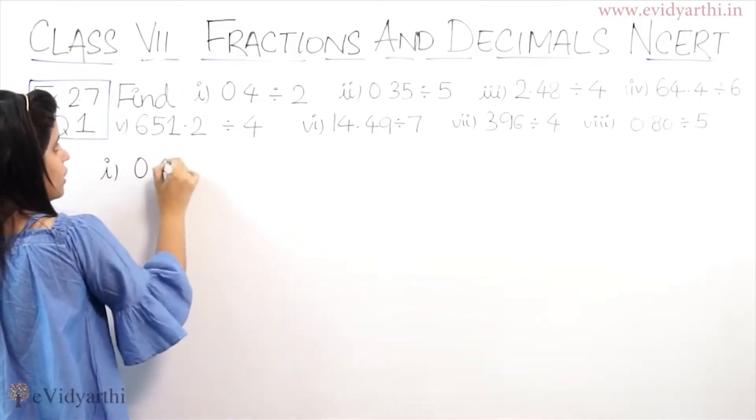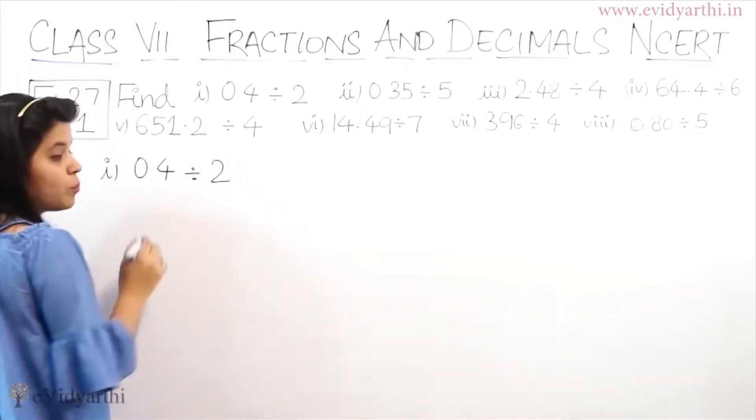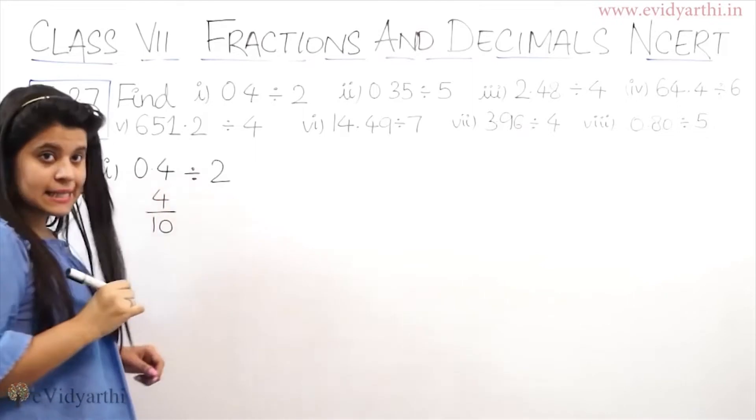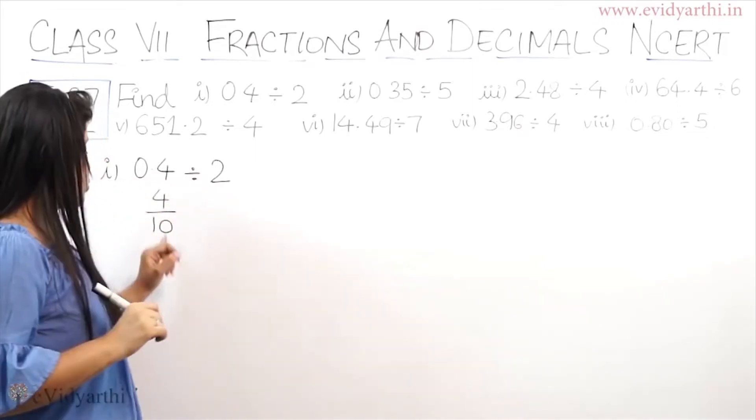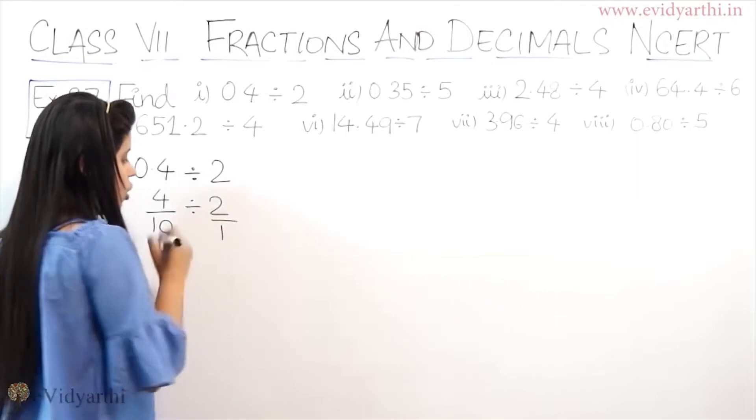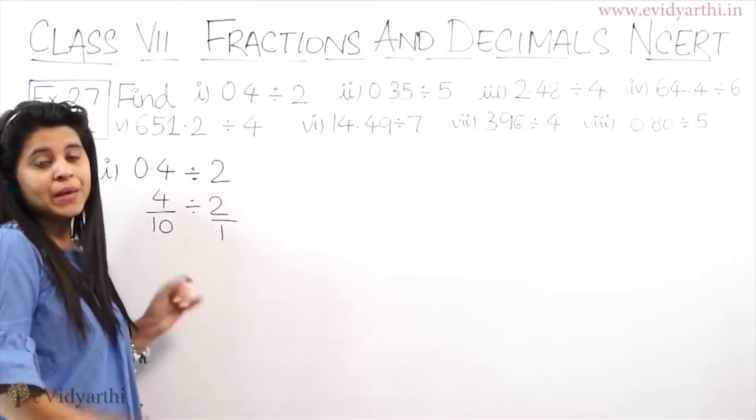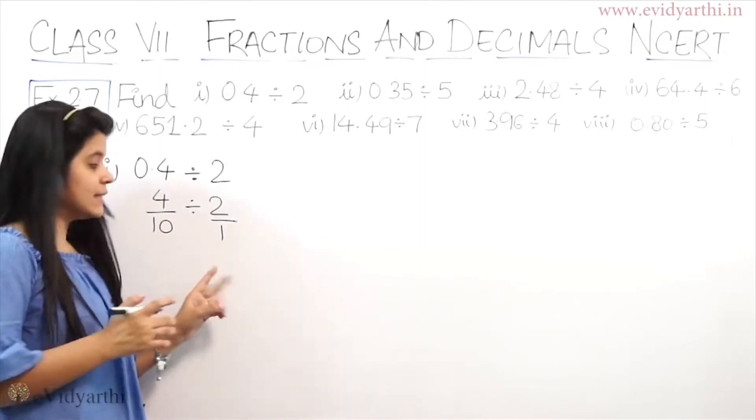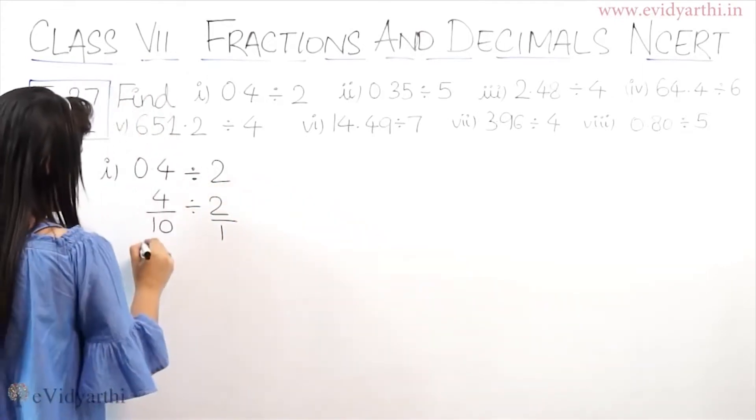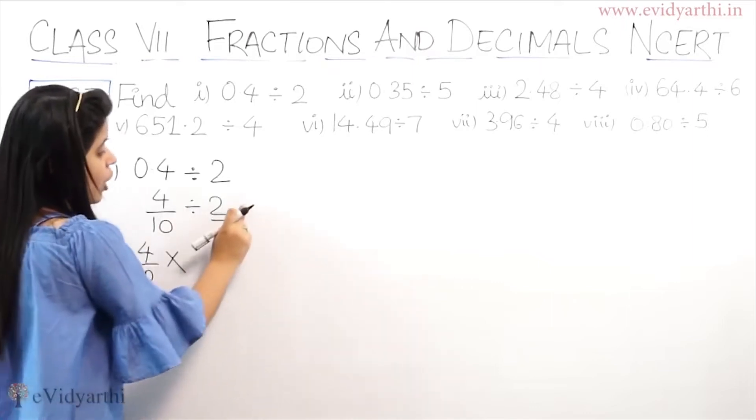First part is 0.4 divided by 2. So 0.4, you have to remove the decimal. So I can say 4 upon 10 because the decimal has 1 number. So we have to divide it by 2. If you divide by 2 numbers, how do we divide? When you divide by 2, the number on the back, we have to invert it.